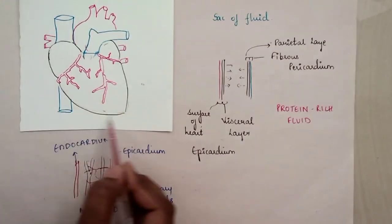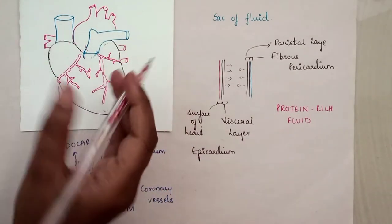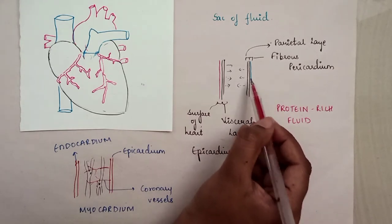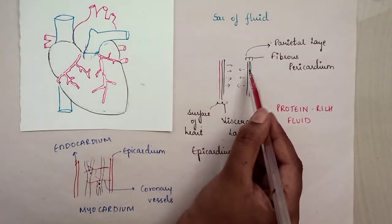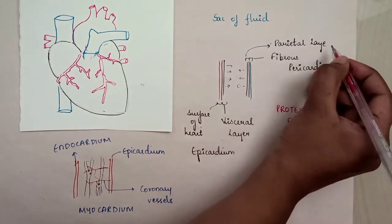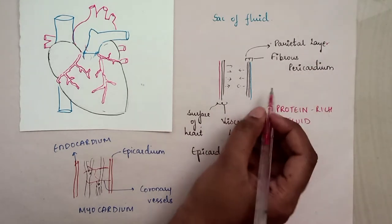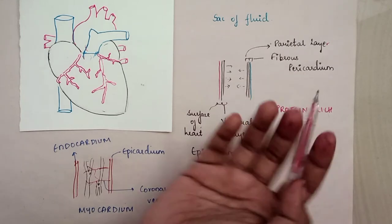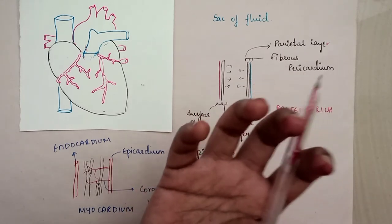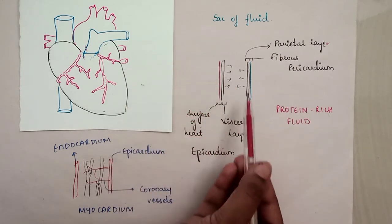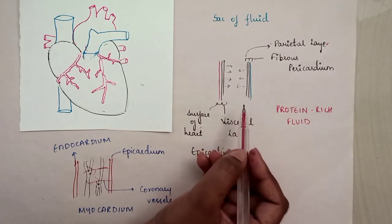The heart is covered with a sac called the pericardium, which has two layers. The outer parietal layer is attached to the fibrous pericardium, which holds the heart in place and prevents excessive fluid collection in the pericardial space.